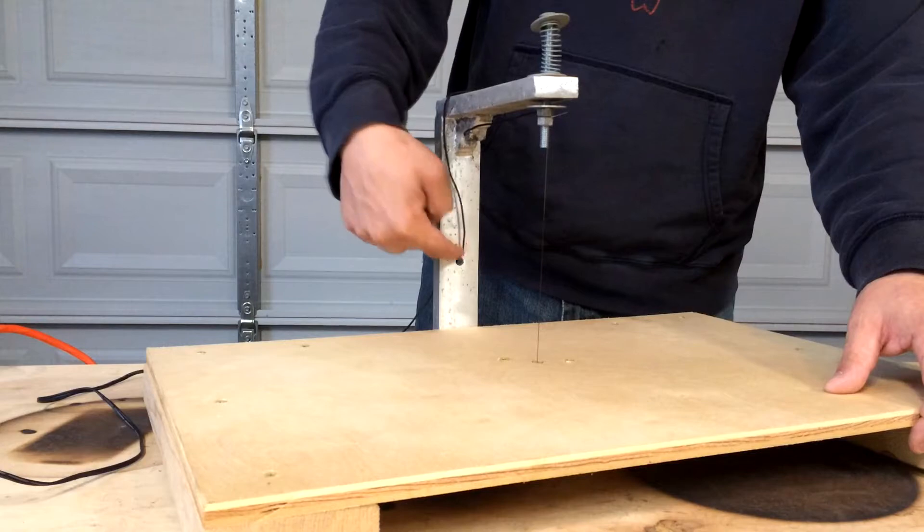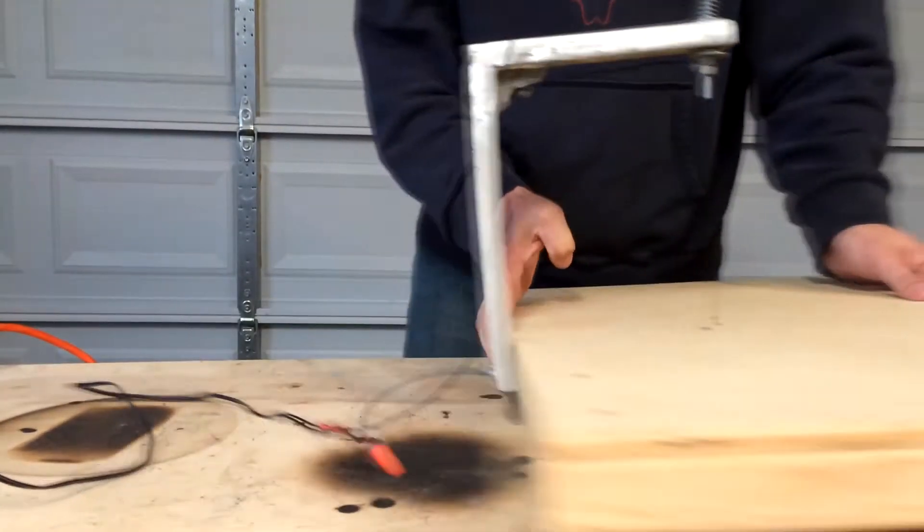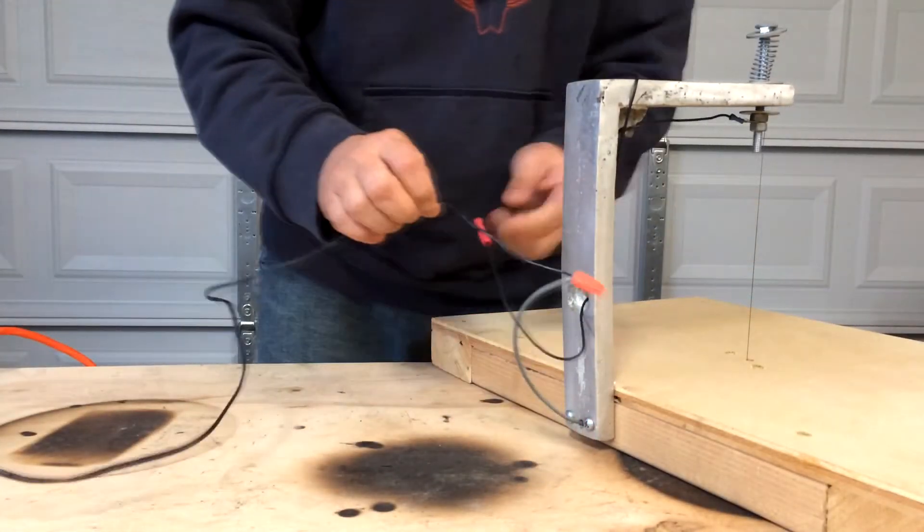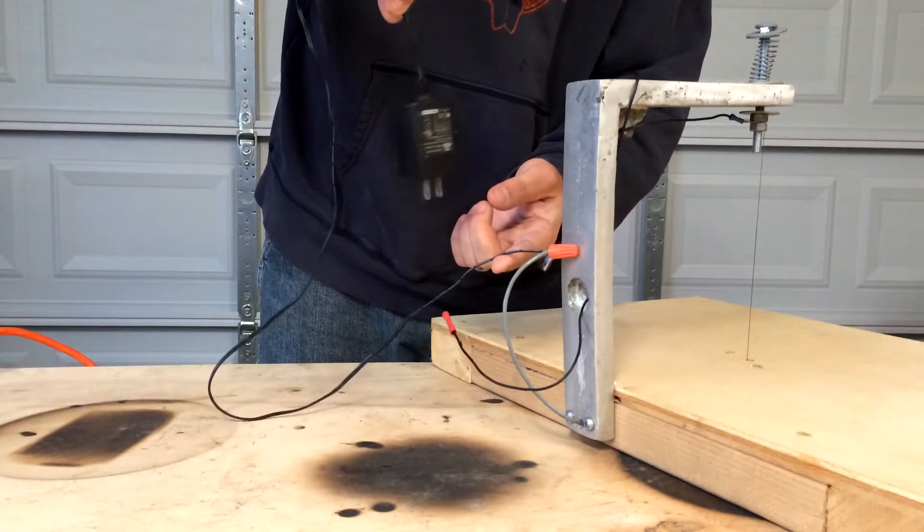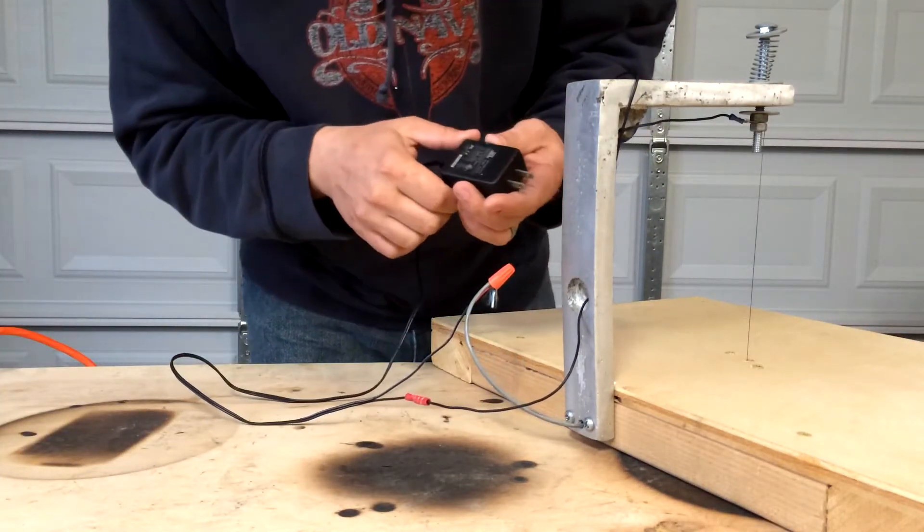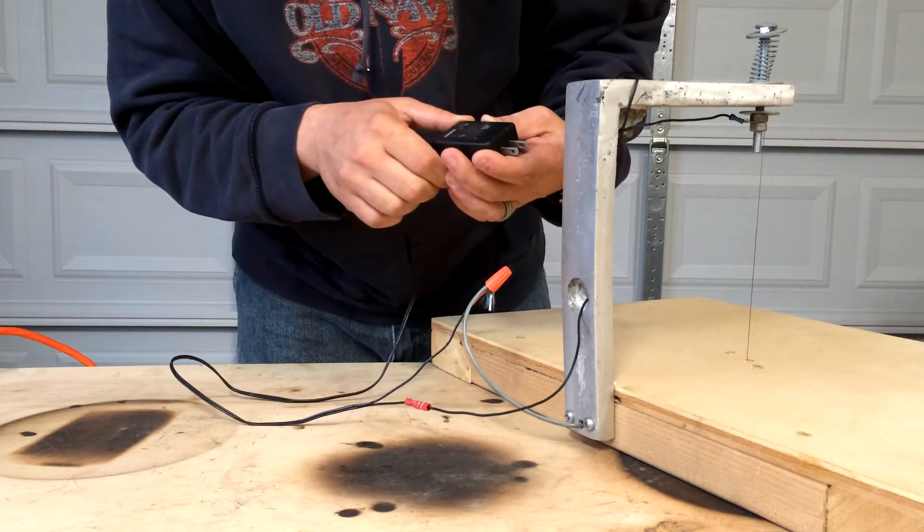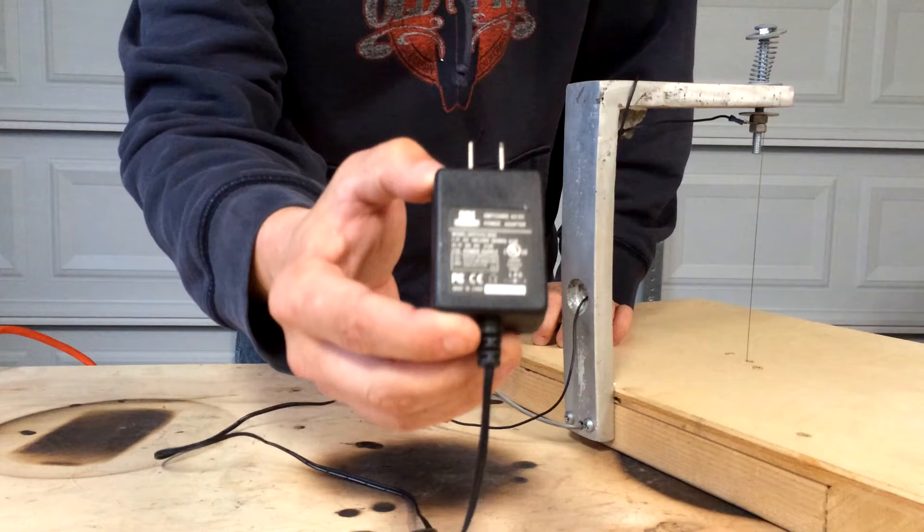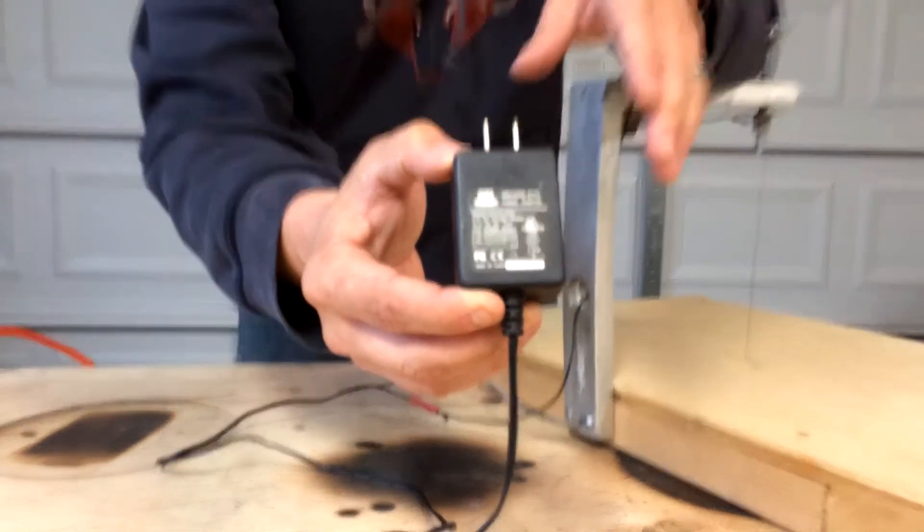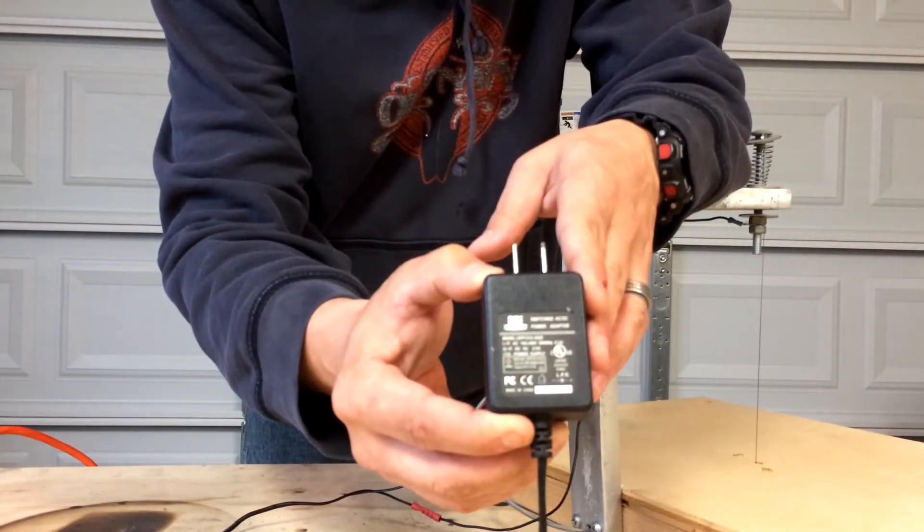That wire runs back, goes through a little hole here. Both of those wires are just connected to a cell phone charger. This one is 5 volts, 2.5 amps, and that seems to work just perfectly.